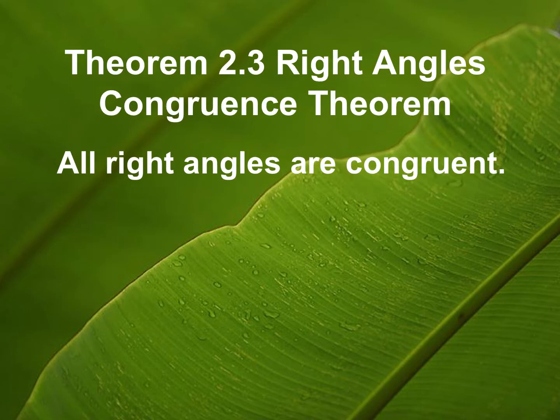Here we go with our third theorem of chapter two. Do not memorize the number. You can memorize the name — it's the Right Angles Congruence Theorem. All this states is that all right angles are congruent. You can either memorize it by name or by what the theorem states.